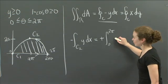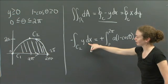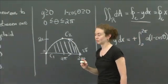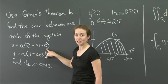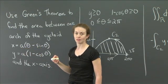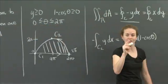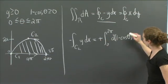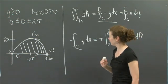We already know y = a(1 - cos θ). Now I need to figure out dx. If x = a(θ - sin θ), then dx = a(1 - cos θ)dθ. That's nice because that's what we already have. So dx gives you a², the squared term (1 - cos θ)², and dθ. That gives you everything you need.